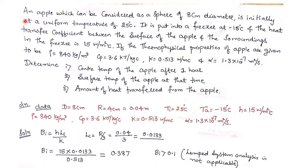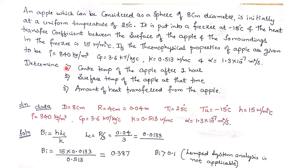The problem: an apple, which can be considered as a sphere of 8 centimeter diameter, is initially at a uniform temperature of 25 degrees centigrade. It is put into a freezer at minus 15 degrees centigrade, and the heat transfer coefficient between the surface of the apple and the surroundings in the freezer is 15 watt per meter square degree centigrade. The thermophysical properties of the apple are: density 840 kg per meter cube, specific heat Cp is 3.6 kilo joules per kg degree centigrade, thermal conductivity k is 0.513 watt per meter degree centigrade, and thermal diffusivity alpha is 1.3 into 10 to the power minus 7 meter square per second.